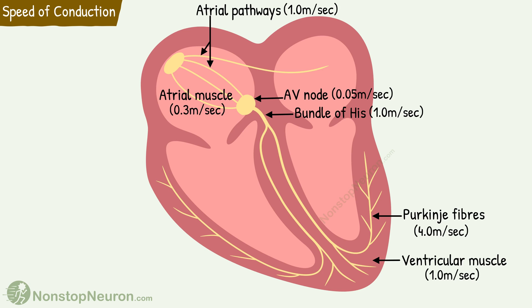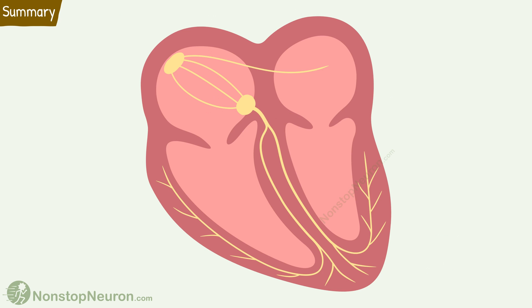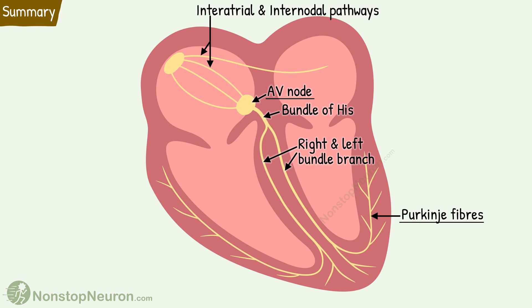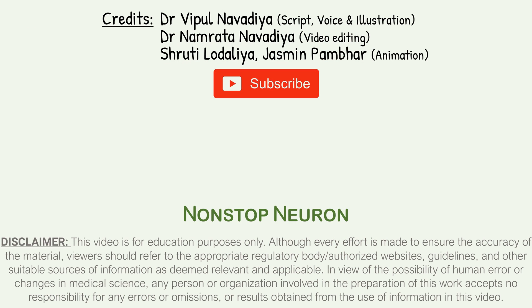So this is the conductive system of the heart. Quick summary: the conductive system includes interatrial and internodal pathways, AV node, bundle of His, right and left bundle branches, and Purkinje fibers. Impulses are delayed at the AV node due to very slow conduction, which allows the atria to empty their blood into the ventricles before the ventricles contract. Purkinje fibers transmit impulses so rapidly that once the impulse enters the Purkinje system, it spreads almost immediately to the entire ventricular muscle mass. If you feel this video will help your friends and colleagues, please share it with them too. Don't forget to subscribe — at Nonstop Neuron, learning medical concepts is as easy as watching cartoons. Thanks for watching.